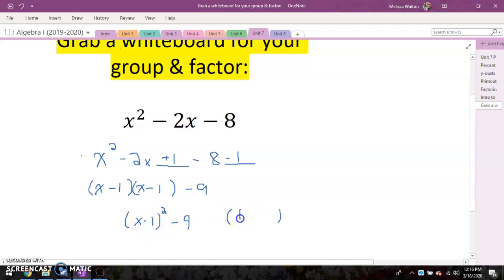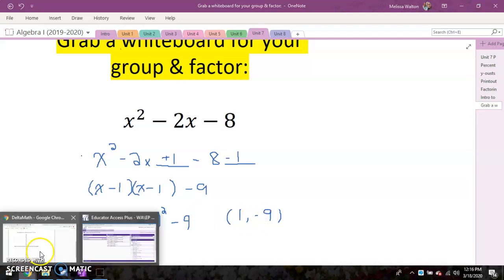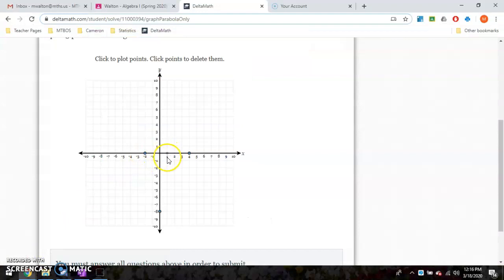So our vertex is right one and down nine. Right one down nine. So let's go ahead and go back to our graph and add that. Right one down nine, one, two, three, four, five, six, seven, eight, nine. Alright.